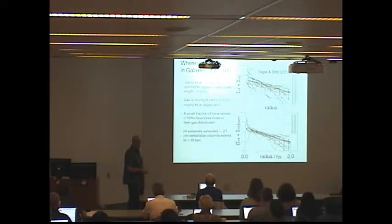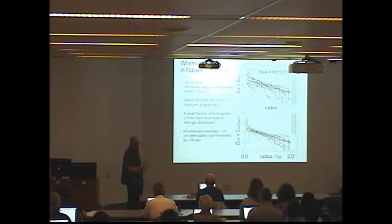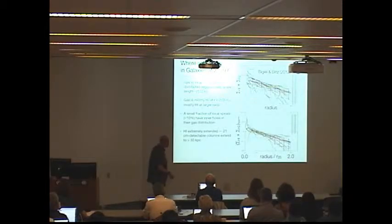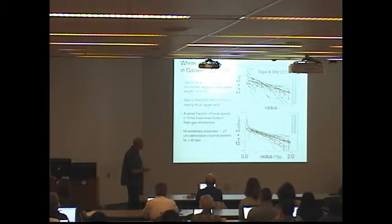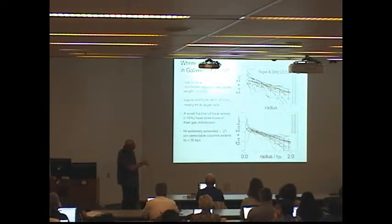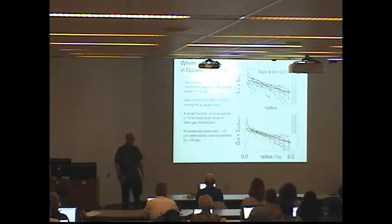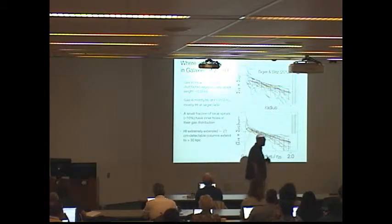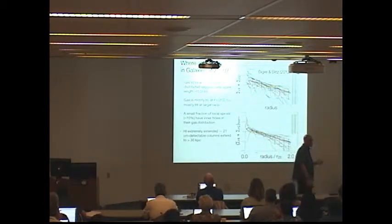You'll see a few galaxies, including our own Milky Way, have central dips — a gas surface density distribution that goes down in the center. That's about a 10% effect; about 10% of the L-star galaxy population has a central hole today. The HI distribution is extremely extended. This plot stops at 20 kpc, but you can detect it significantly further out — you can routinely detect 21 centimeter emission 30 kpc from the center. HI disks are very extended compared to stellar disks, and as you go further out, you get more and more gas-rich.